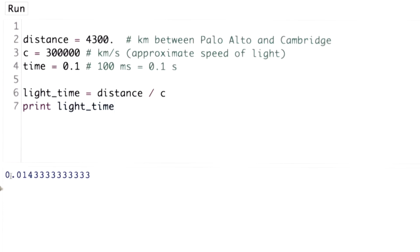So if it was traveling at the speed of light, it would take 0.014 seconds to get across the country, which is 14 milliseconds. What it actually took was 100 milliseconds. And if we divide the time it actually took by the time it would take light to travel, we get 6.97.